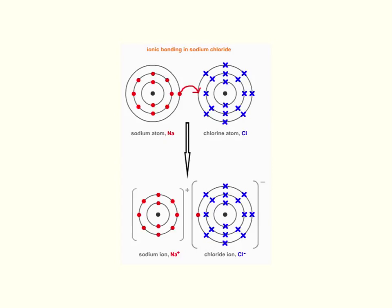So we've got a sodium atom here on the left with one electron in the outer shell, and we've got a chlorine atom on the right with seven electrons in its outer shell. The sodium atom will give this electron to the chlorine atom, and so the sodium atom becomes a sodium ion.